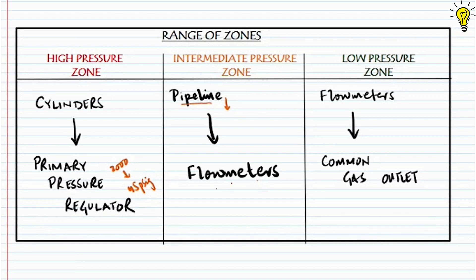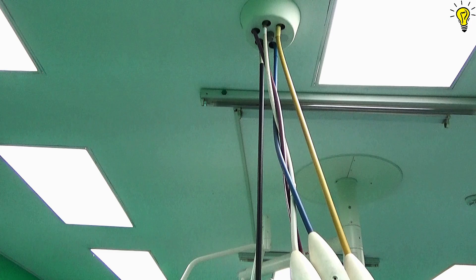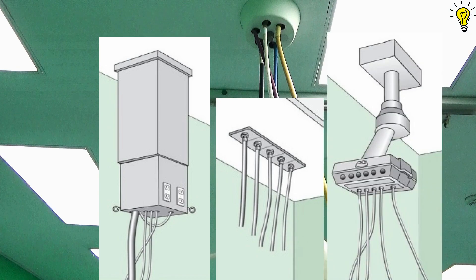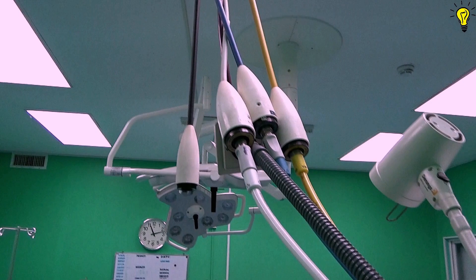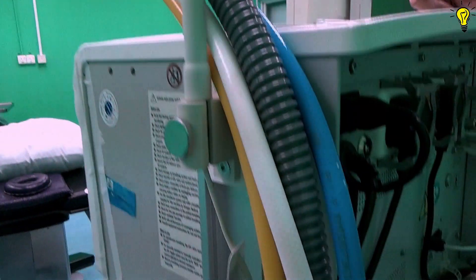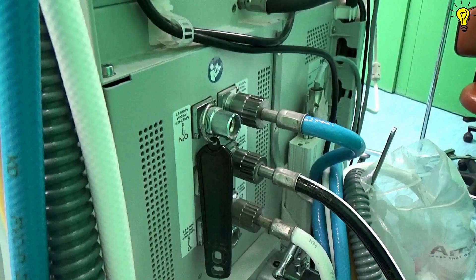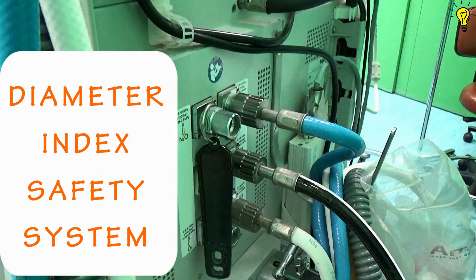The flow meters are part of the low pressure zone. The hospital pipeline supply can enter the OT from the ceiling as either ceiling hose drops or in the form of gas columns or articulating arms. You can also see the gray colored corrugated line of active vacuum for anesthetic gases. The other end of these color-coded pipelines connects directly into the machine.